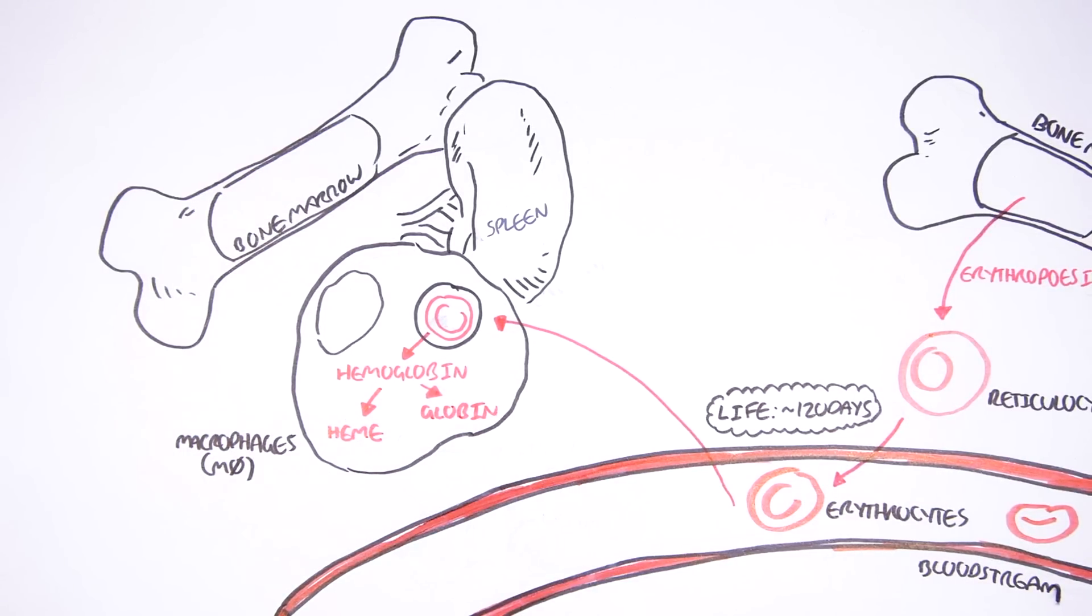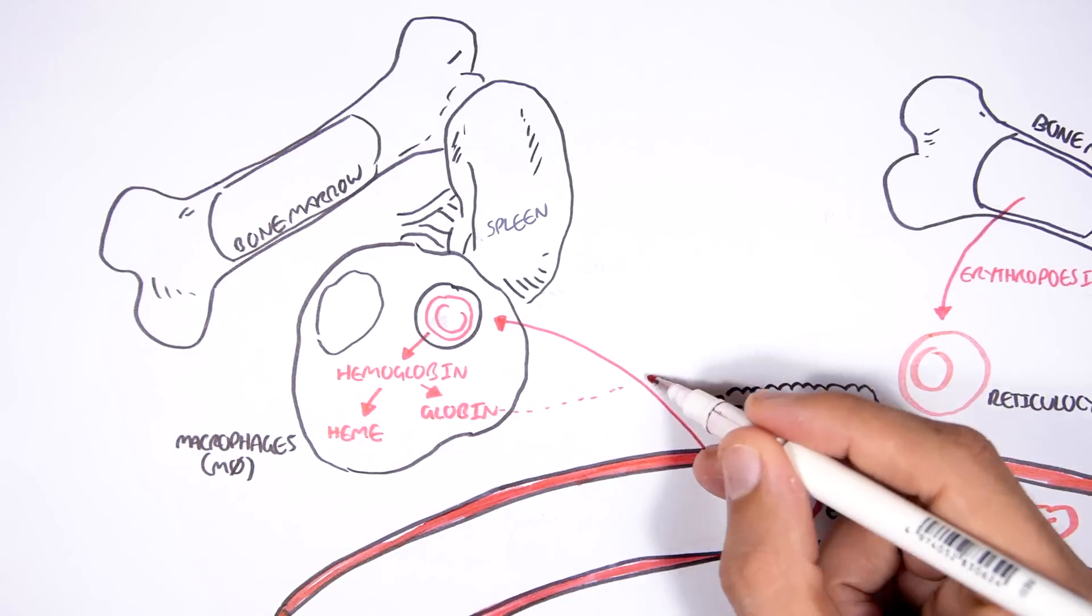Globin is essentially protein. And so globin will be broken down to amino acids, which then reenter the blood and are reused for erythropoiesis again.